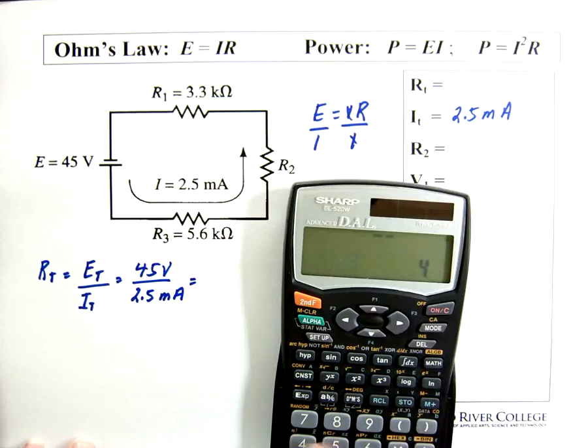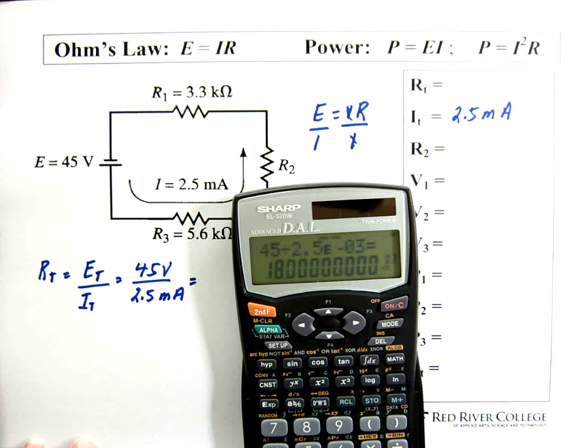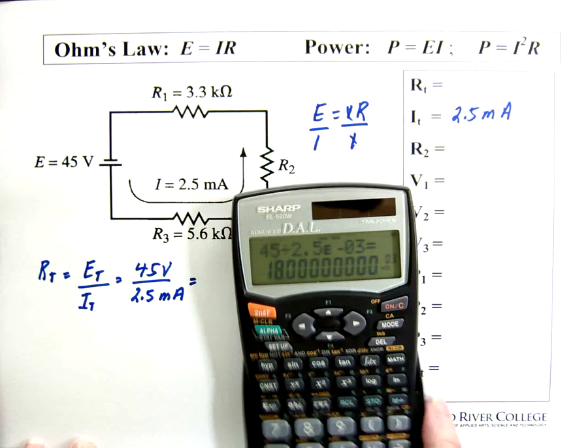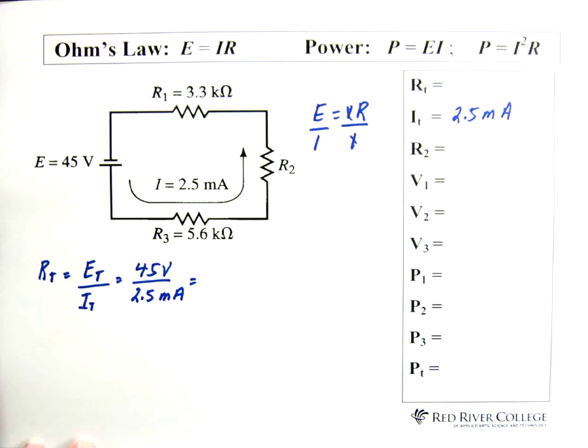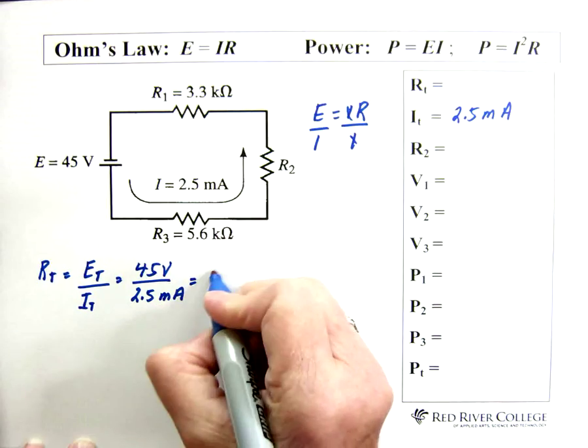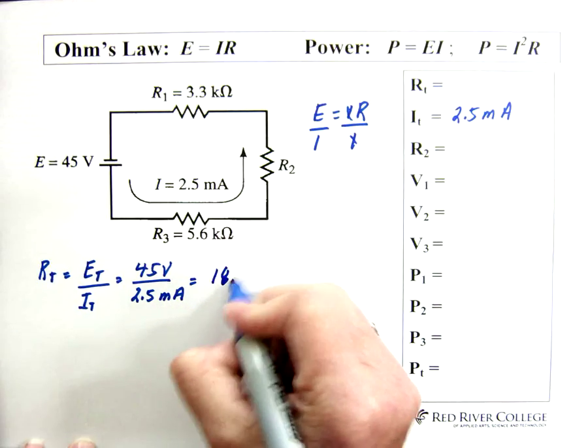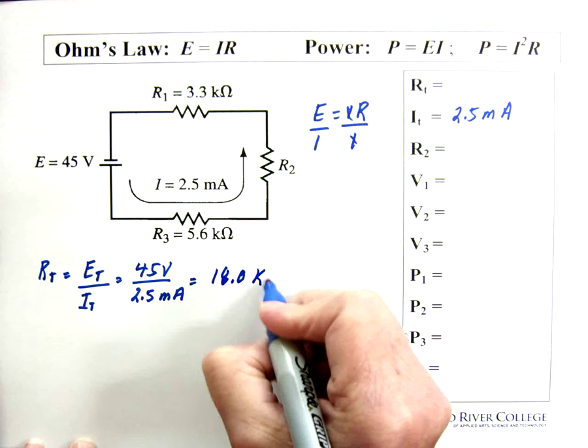So we take 45 and divide it by 2.5, and because it's milli, which is 10 to the minus 3, we go exponent negative 3 equals. And we end up with, as you can see, 18 times 10 to the 3, which is 18 kilohms.